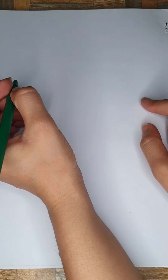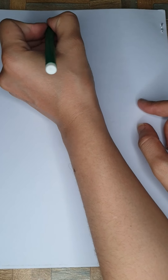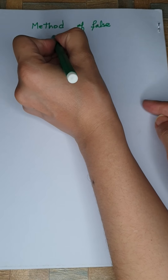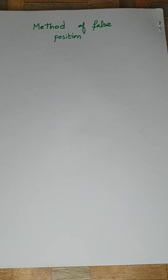Hello everyone. Today's lecture is about the Method of False Position, also known as the Regula Falsi method. This is one of the methods used in numerical analysis for solving nonlinear equations, logarithmic equations, trigonometric equations, and polynomial functions. These are iterative methods, meaning they are approximated methods that give us one value of the root of a function at a time.